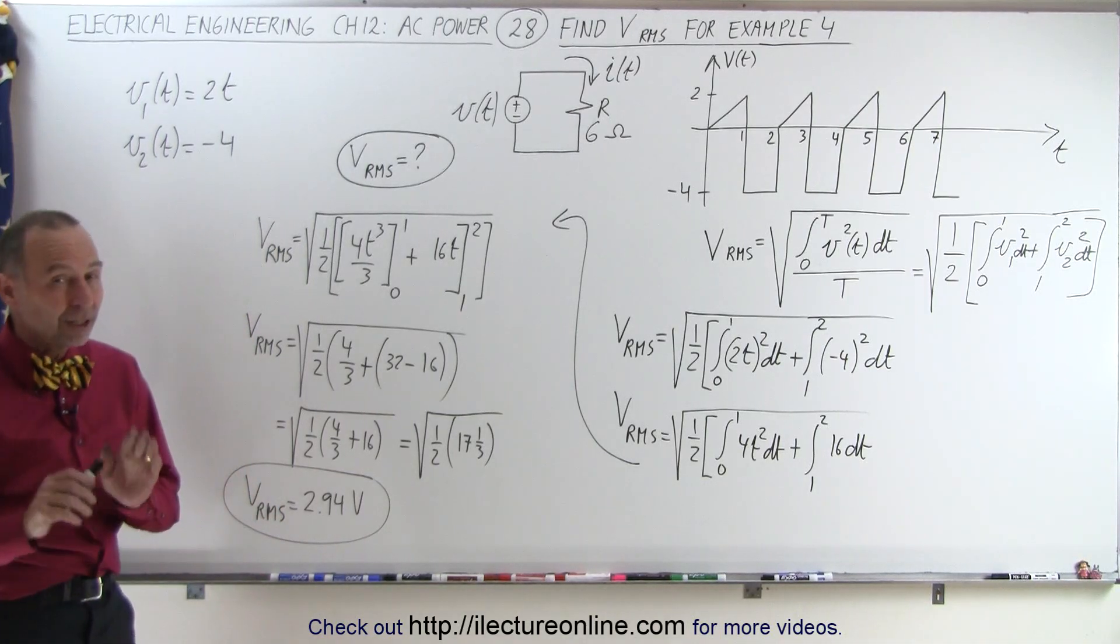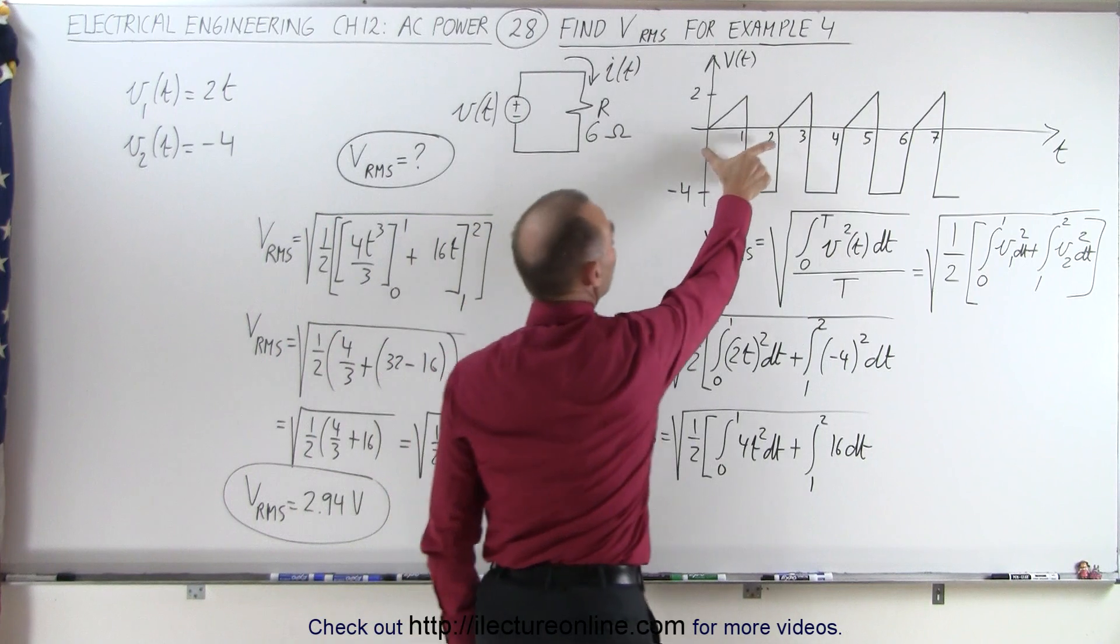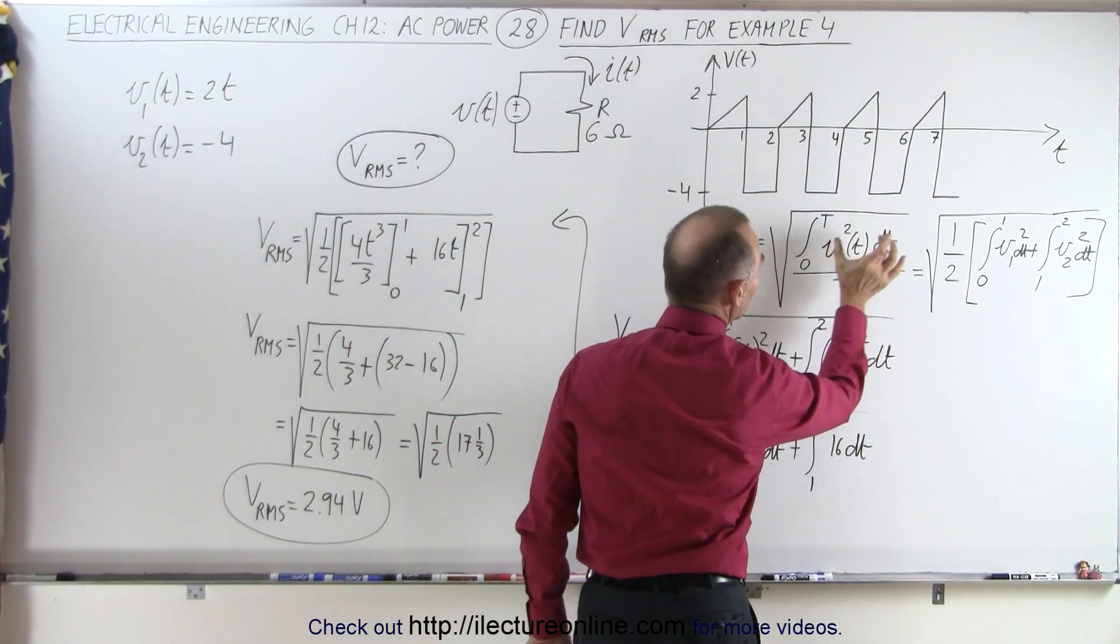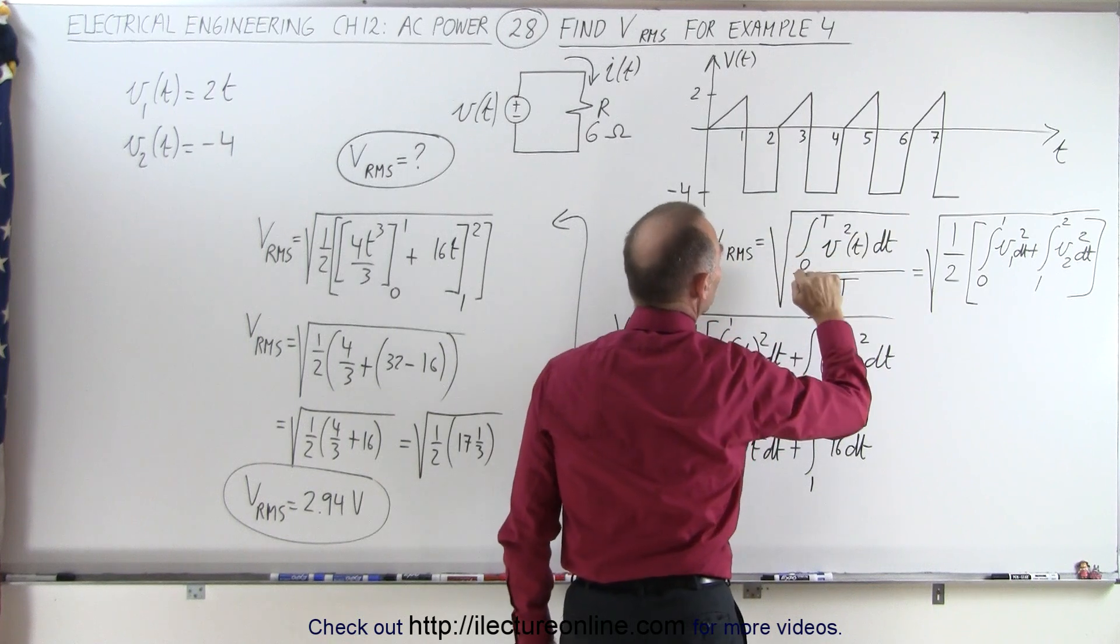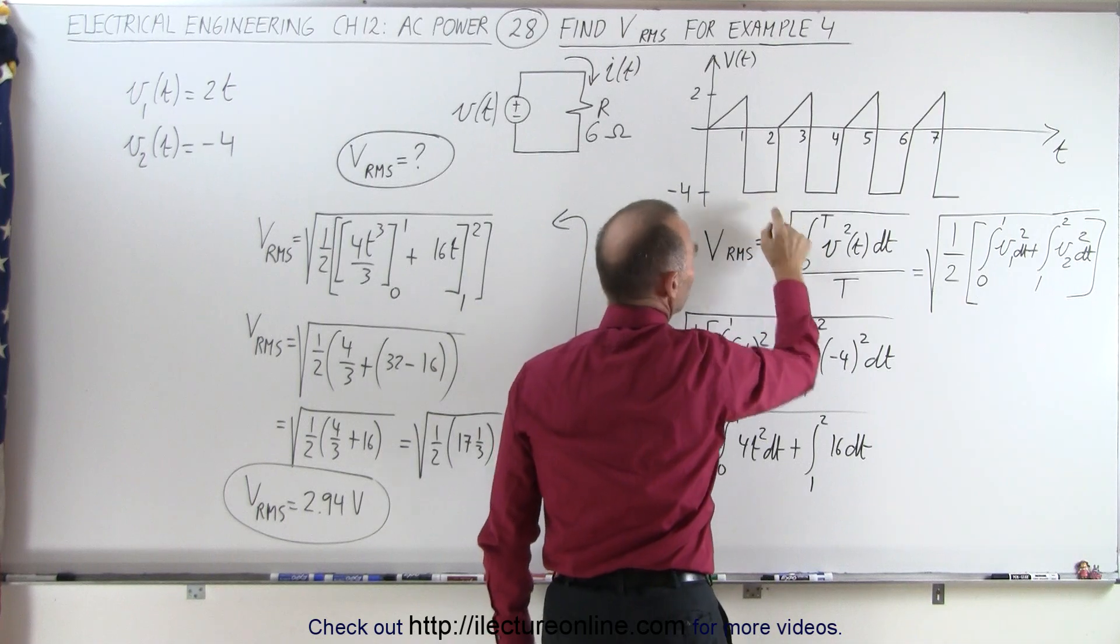All right, so you can see that things are a little bit different here. We need to be very careful. We do have a period of 2, so therefore, the period here will still be 2, but we have two contributions to the numerator here. We're going to integrate the first portion from 0 to 1, and the second portion from 1 to 2.